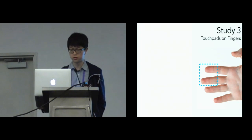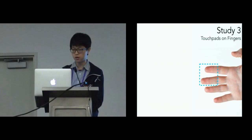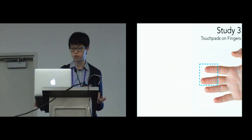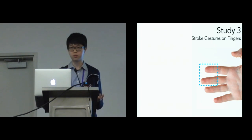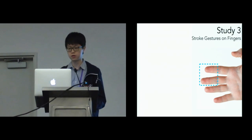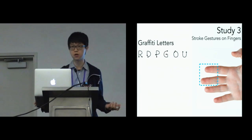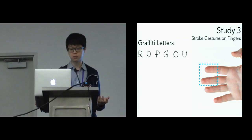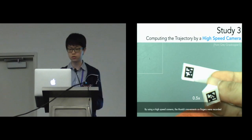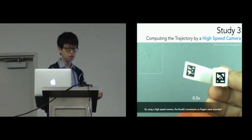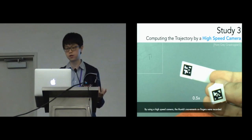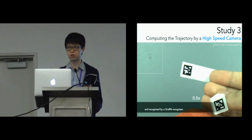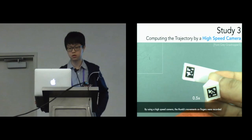Now let's go to Study 3, the final study. We selected stroke gestures for touchpad widgets, since performing gestures in an eyes-free manner is a very important research question in mobile scenarios. We selected six Graffiti letters considered hard to recognize and perform accurately in an eyes-free manner, as mentioned in previous works. We used a high-speed camera, and participants performed the Graffiti letters eyes-free while our system calculated and computed the trajectories.